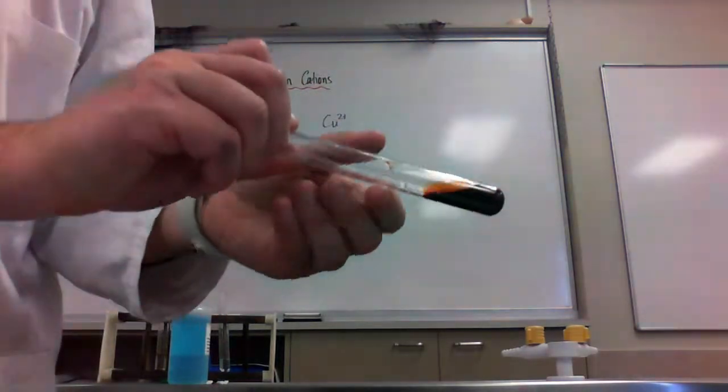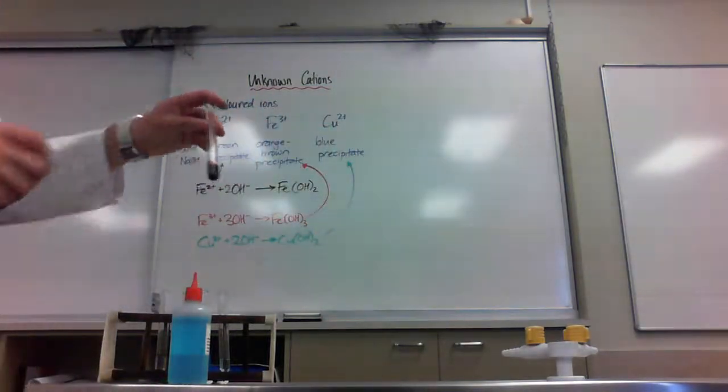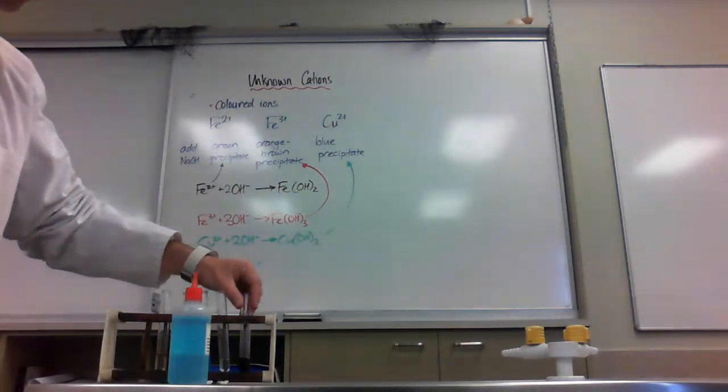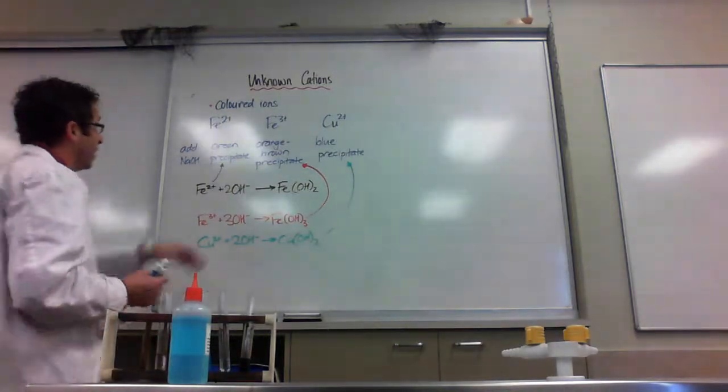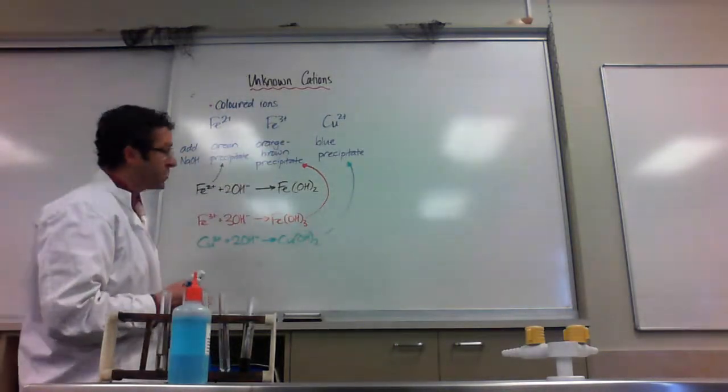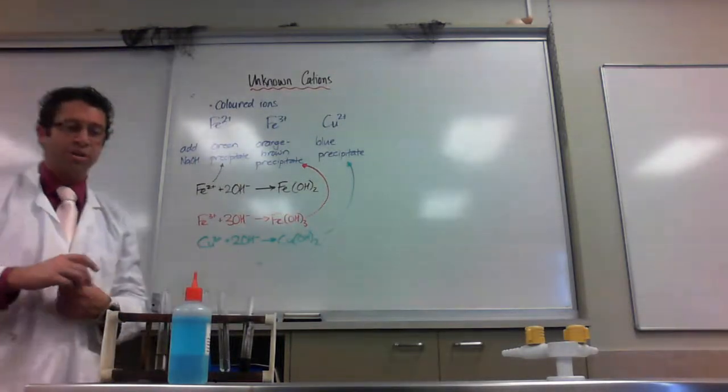Now this is something you meet in the equilibrium topic. And that is our confirmation that it was indeed Iron 3+, the one that made the orange brown precipitate. So we need, again, we need to show a chemical equation for this.